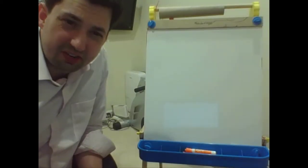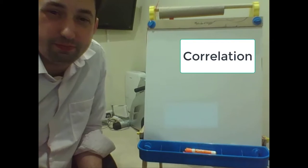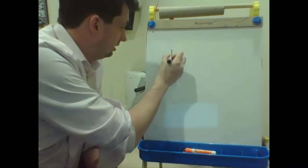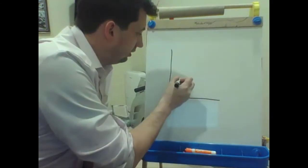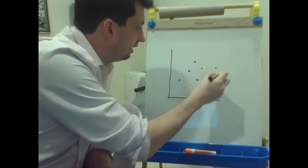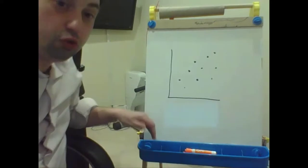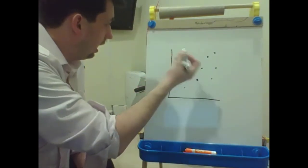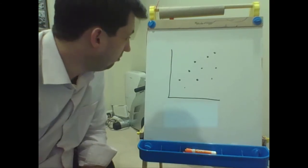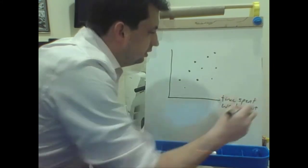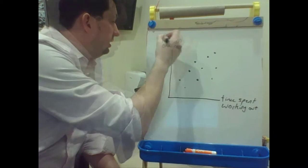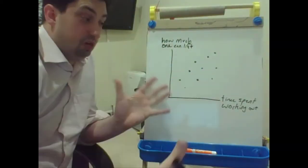Today we're going to be discussing correlation. To illustrate correlation, consider our standard scatter plot, something we've talked briefly about previously. In our kind of scatter plot, we have two variables — maybe time spent working out and how much one can bench press.